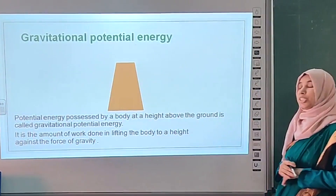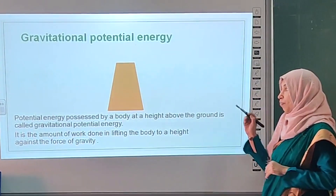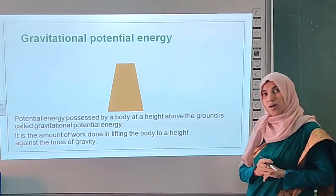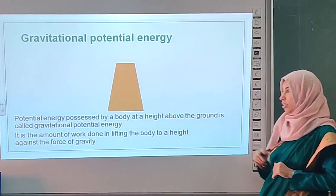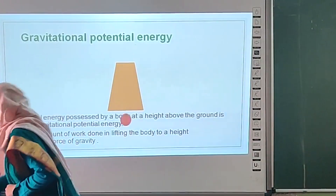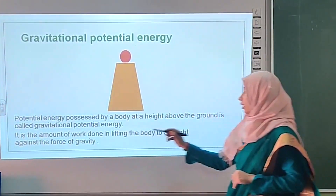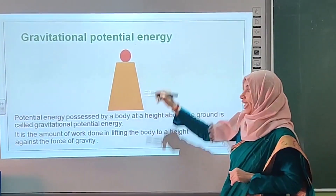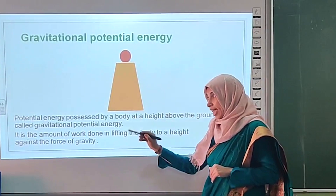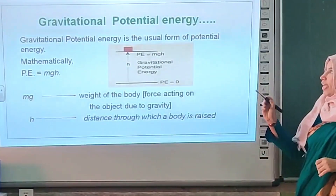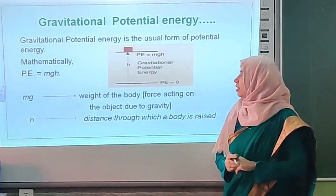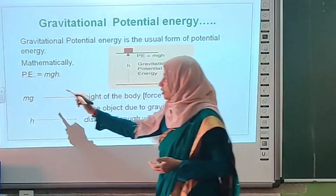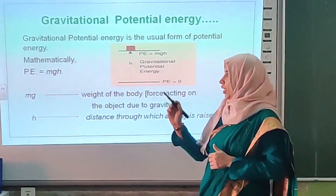Gravitational potential energy: the potential energy possessed by a body at a height above the ground is called gravitational potential energy. It is the amount of work done in lifting the body to a height against the force of gravity. Mathematically, potential energy is equal to mgh.